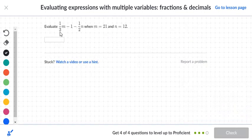Let's go to the next question. Here we've got some fractions. We're going to say 1 third. Notice m is 21, so we'll just say 21 over 1, minus 1.